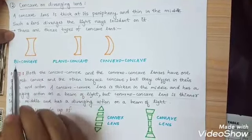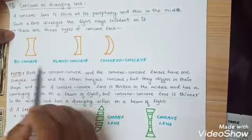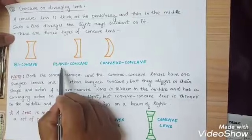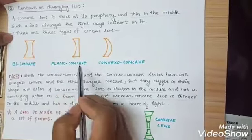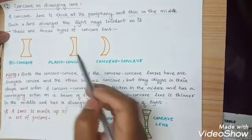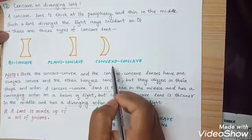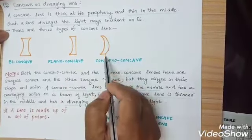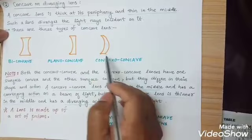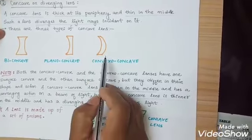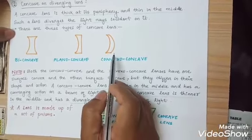Concave lens is also of three types. One is biconcave — both sides concave. Another is plano-concave — one side plane, another side concave. And the third is convexo-concave. So those are the three types of concave lens.